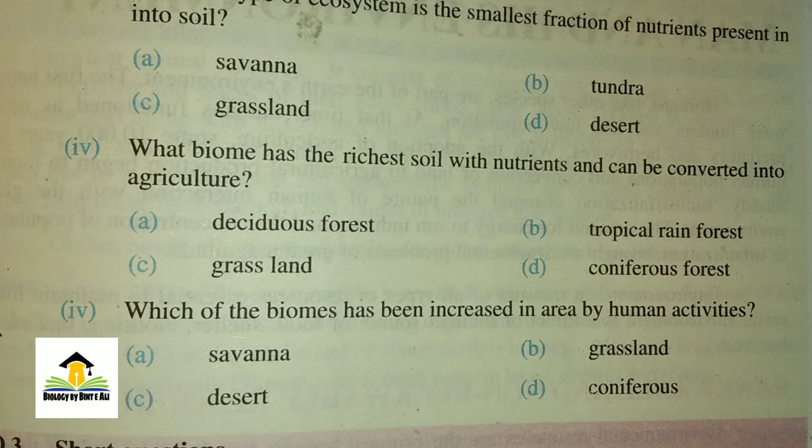MCQ number five: Which biome has been increased in area by human activities? A) savanna, B) grassland, C) desert, D) coniferous forest. The right answer for this MCQ is C, desert.